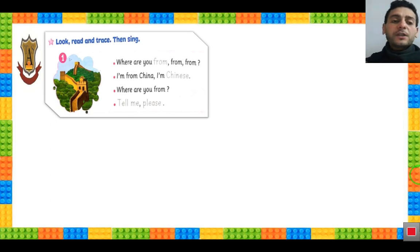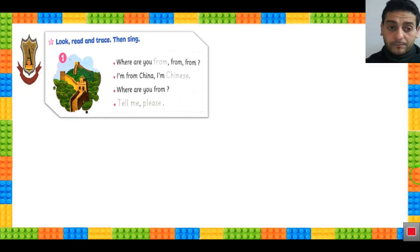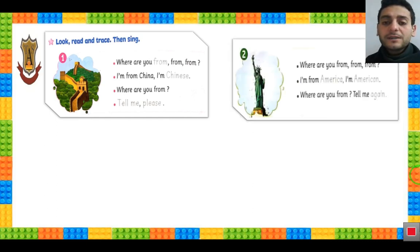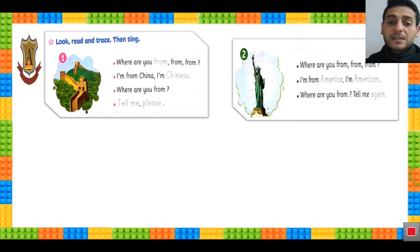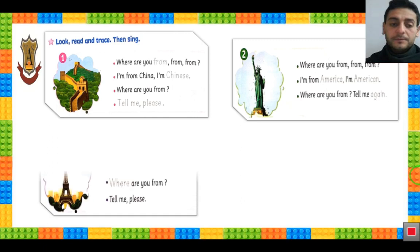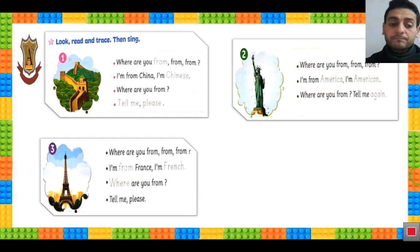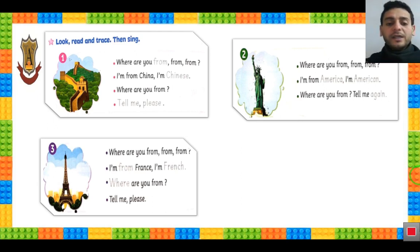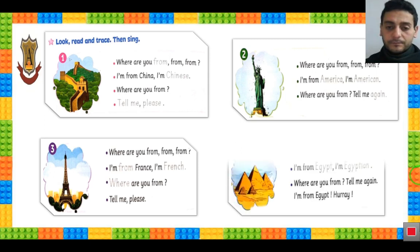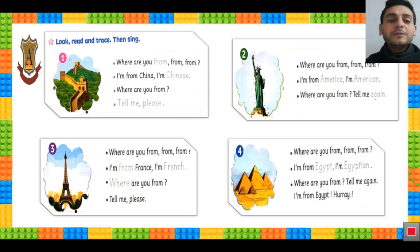Look at this picture. What is this? This is the Great Wall of China. Number 2: What is this? This is the Statue of Liberty. Number 3: What is this? This is the Eiffel Tower in Paris. Number 4: The Pyramids in Egypt.